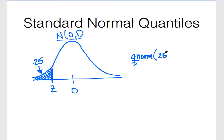That's 0.25, and then we know that we're working with a standard normal distribution, which would mean mean 0 and standard deviation 1. And that's how we find our quantile.